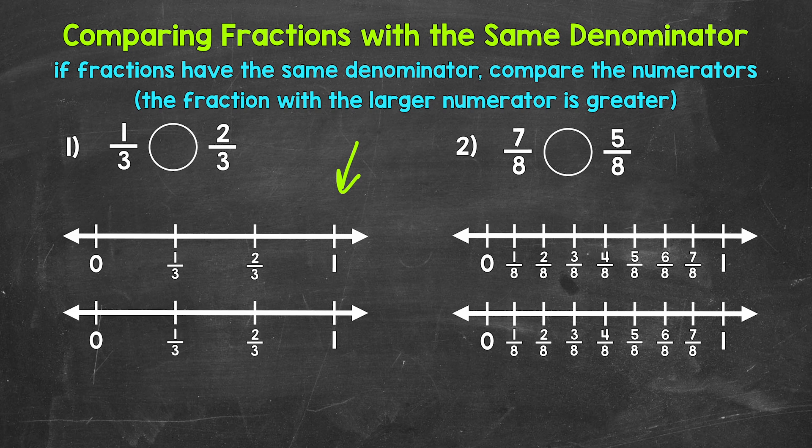Let's mark one-third and two-thirds. Let's mark one-third on this number line right here. So here is one-third. Let's mark two-thirds on this number line right here. So here is two-thirds.